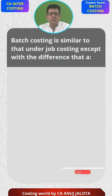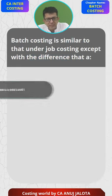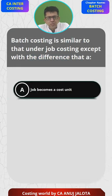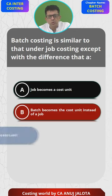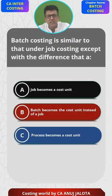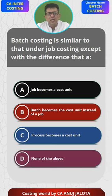Batch costing is similar to job costing except with a difference that: A — a job becomes a cost unit; B — a batch becomes a cost unit instead of a job; C — a process becomes a cost unit; and D — none of the above.